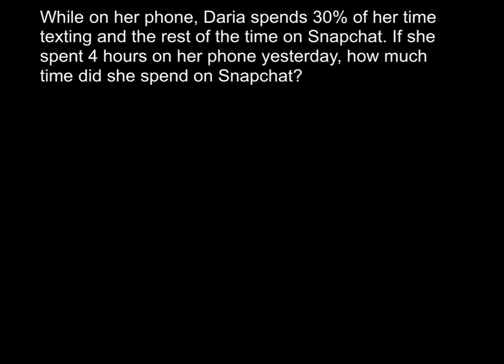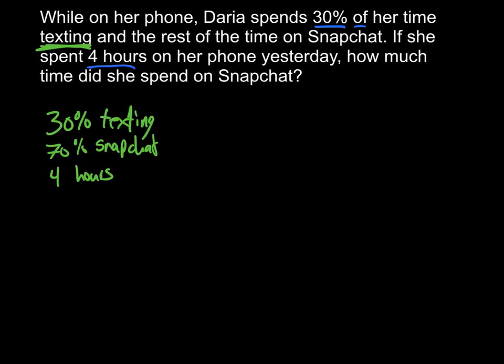Let's look at the next problem. While on her phone, Daria spends 30% of her time texting, and the rest of the time on Snapchat. If she spent four hours on her phone yesterday, how much time did she spend on Snapchat? Pay careful attention to the wording, because we did change one element here. 30% is texting, which means that we need to get that 70% for Snapchat.